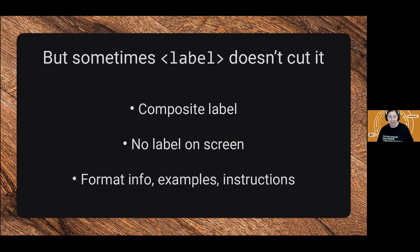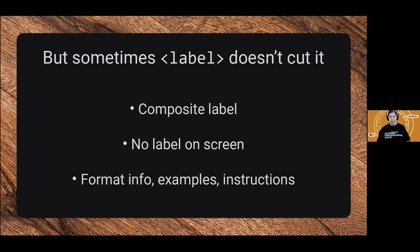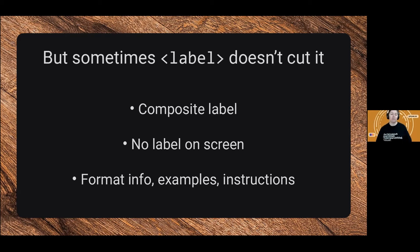Sometimes you might want to build a composite label out of multiple sources of text that's on the screen. Sometimes you've got a text field where there is no text label on the screen to link to, but we still need to label that text field. And sometimes your text field may be accompanied by format information, example data, instructions, errors, and all of this sort of supplementary information. You really shouldn't be stuffing a label with all of that stuff, but we do still need to link it to our text field somehow. ARIA is a good way to do that.